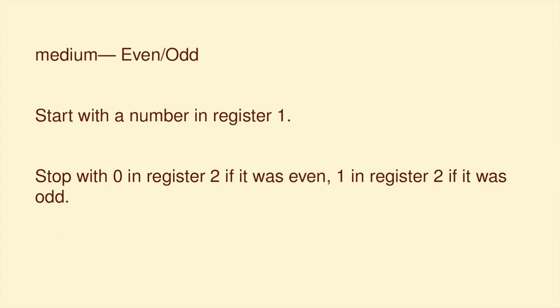All right, here's the medium one. Let's start with some number in register 1, and test if it's even or not. So I want you to make it so the machine stops with a 0 in register 2 if the original number was even, and it stops with a 1 in register 2 if the original number was odd. This is actually the same as computing the original number mod 2.